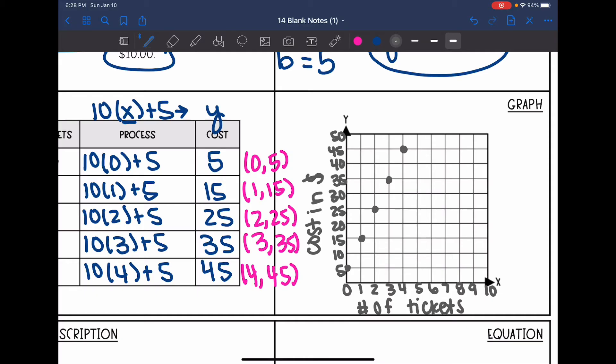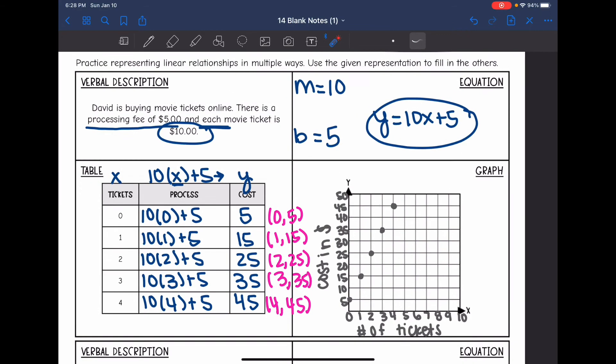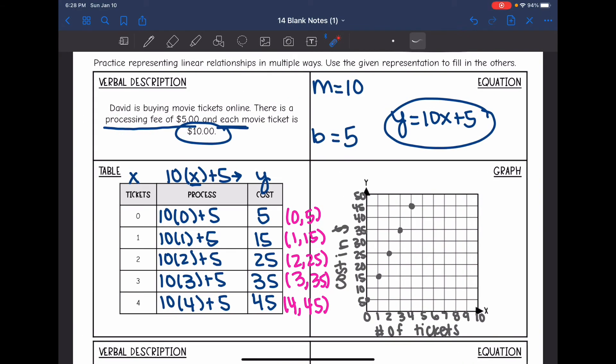And I'm going to leave this disconnected because I'm not going to buy anything between 0 and 1 ticket. We'll just buy a whole number of tickets. So I'm going to leave my graph disconnected or discrete to represent that. So there is the movie ticket situation represented with a verbal description, equation, table, and graph.